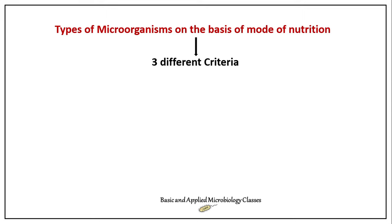Whenever we are learning about any type of classification or grouping, various criteria are used. Similarly, when we are talking about mode of nutrition in terms of microorganisms, there are three different criteria which are very popular to understand this topic. The first criteria is on the basis of carbon — what kind of carbon source microorganisms prefer for their growth.